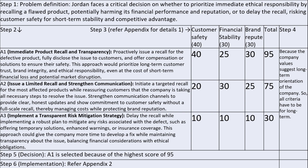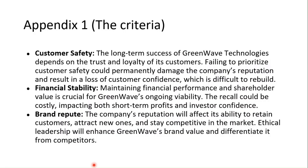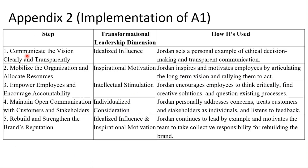Out of the three alternatives, we see that alternative one scores highest at 95, and that's why we choose to go with alternative one — which is step five. Having decided on alternative one, the immediate next question is: what are the different steps to implement this decision? Here I have noted to refer to Appendix Two. Appendix one covers the criteria and their importance; appendix two covers the different implementation steps.